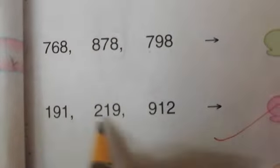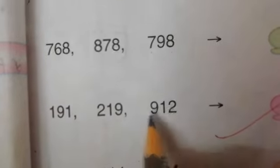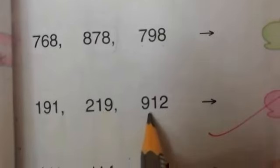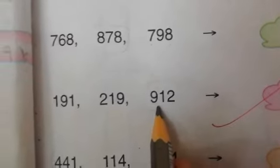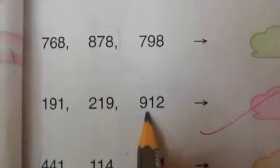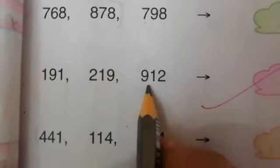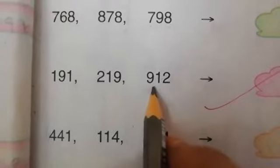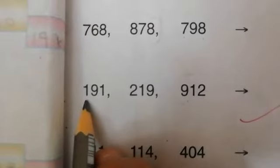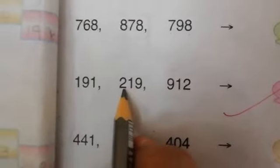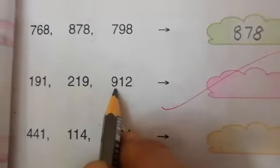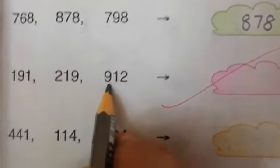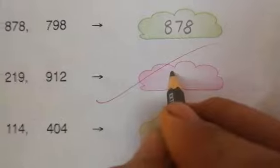Read it. 191, 219, 912. Now tell me which number is the largest number? Which number has the largest hundreds? 900. It means 912 is the largest number.